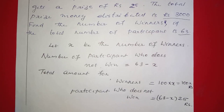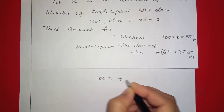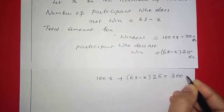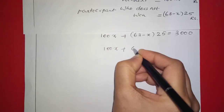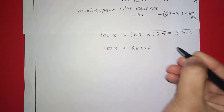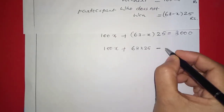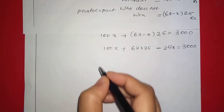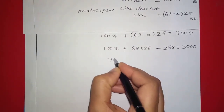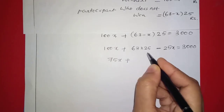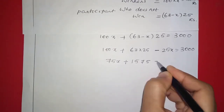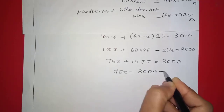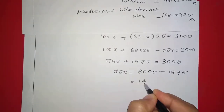So the equation is: 100x plus 63 minus x into 25 equals 3000. Expanding: 100x plus 63 into 25 minus 25x equals 3000. That gives 75x plus 1575 equals 3000. So 75x equals 3000 minus 1575, which equals 1425.